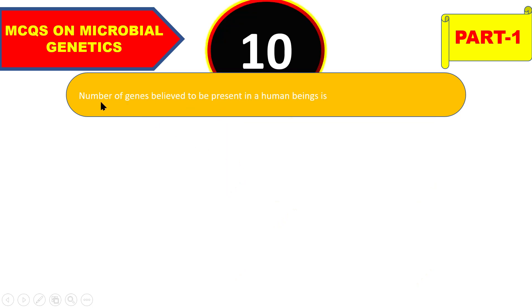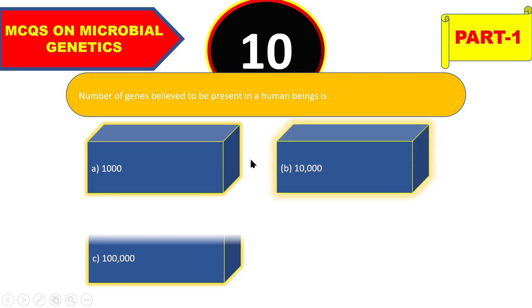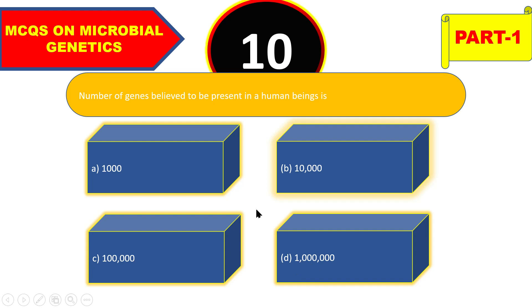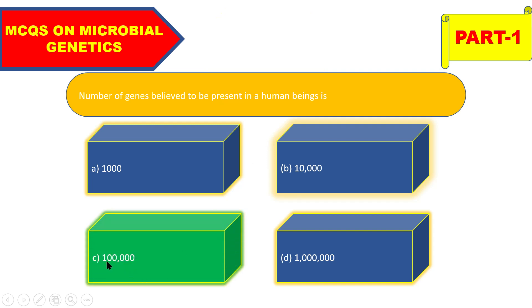Next question: the number of genes believed to be present in human beings is 1000, 10,000, one lakh, or ten lakh? The right answer is one lakh.